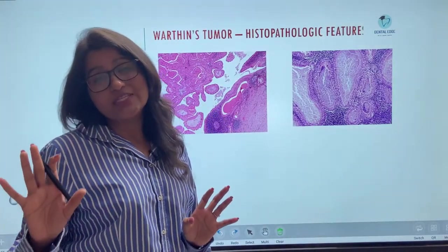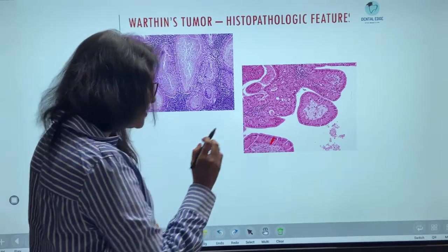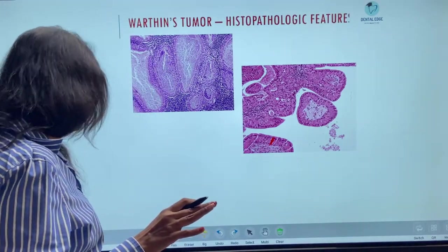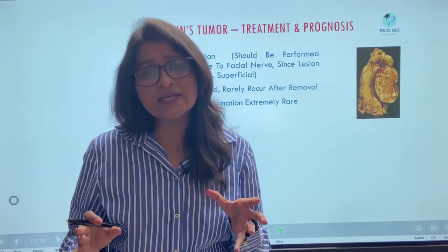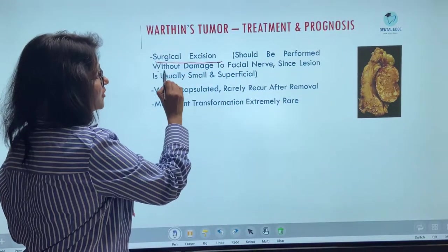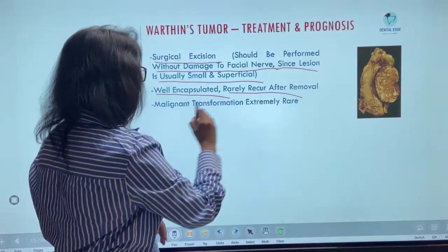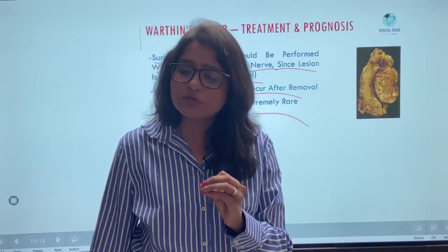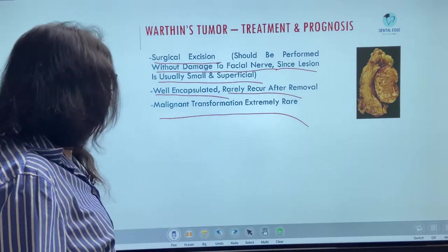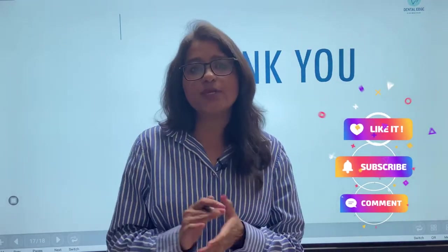The low-power image is what you typically see in examination slide identification, while the high-magnification image clearly shows the oncocytic bilayered epithelium. Regarding treatment, surgical excision is the treatment of choice. Since Warthin's Tumor is usually small, well encapsulated, and superficial, excision should be performed without damage to the facial nerve. Recurrence after removal is rare, and malignant transformation is extremely rare. References are Shafer's and Neville. Thanks for watching — do like the video and subscribe to the channel.